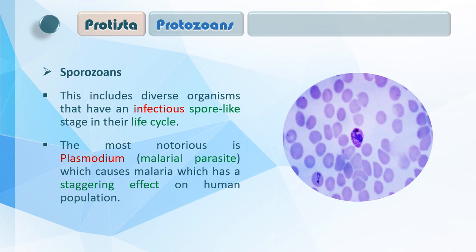Sporozoas protozoa की fourth और last category है। ये spores form करते हैं इसीलिए इनका नाम Sporozoas है। ये organisms mostly infectious हैं — diseases करते हैं, इसीलिए इनको pathogens और parasitic organisms कहते हैं। This includes diverse organisms that have an infectious spore-like stage in their life cycle। Spores infectious होते हैं जो damage करते हैं। The most notorious is Plasmodium — the malarial parasite, which causes malaria, which has a devastating effect on human population।